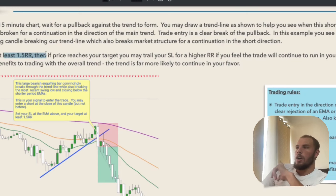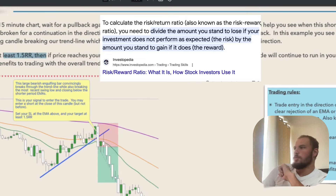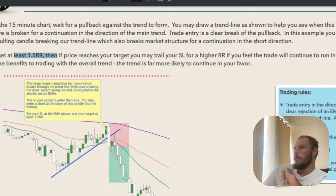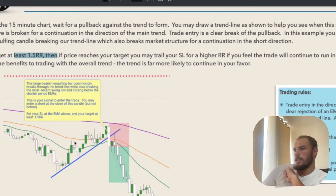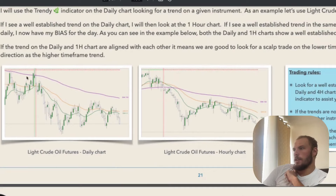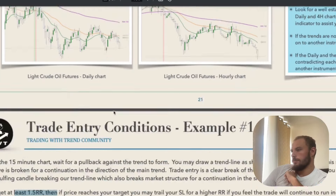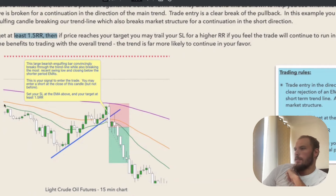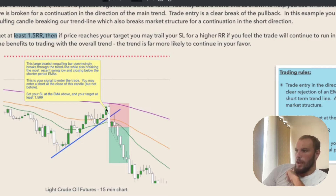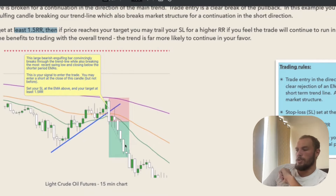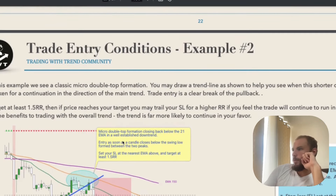Target at least 1.5 RR, and then if the price reaches your target, you may trail your stop loss for a higher RR if you feel like the trade will continue to run in your favor. This is one of the benefits to trading with the overall trend — it's far more likely to keep continuing, and you can normally get a very good trailing RR. So to recap: we're in a downtrend, there's an uptrend pullback, we wait for the trend line of the pullback to break, and then the price continues to freefall with the original direction of the trend.